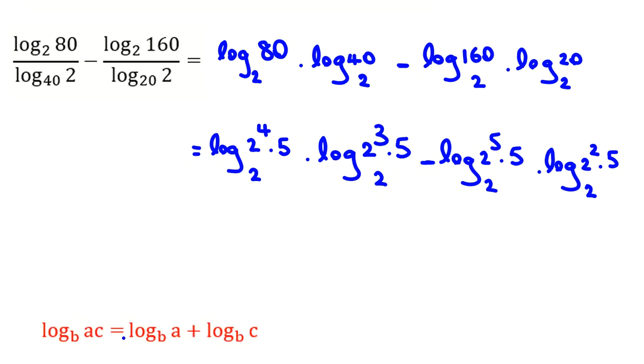Now, if we have a product here, we can change it to a sum. Log base B of AC equals log base B of A plus log base B of C. So, I can write the first one: log base 2 of 2 to the 4 plus log base 2 of 5.